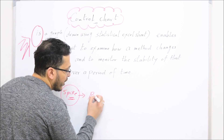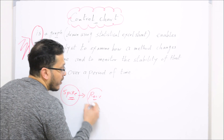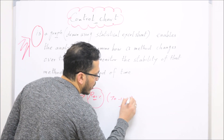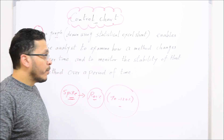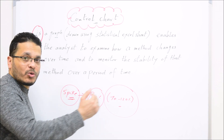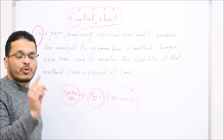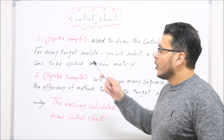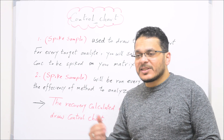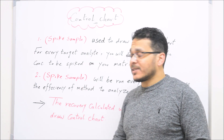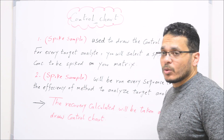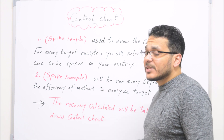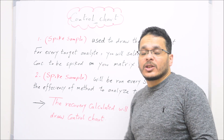From the spike sample you calculate the recovery. This recovery should be within an acceptable range according to the guidelines used — for example, from 70% up to 120%. Every day you assess the efficiency of your method using a spike sample. The control chart, however, assesses the efficiency of your method over a period of time, not just one working day. The recovery calculated from these spike samples each day is collected daily to draw the control chart.